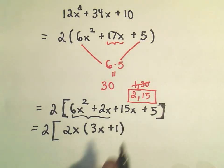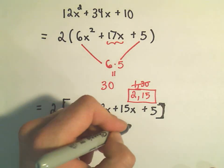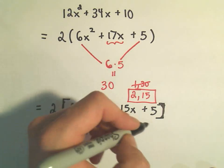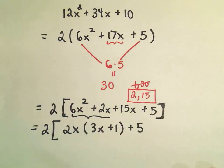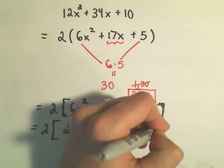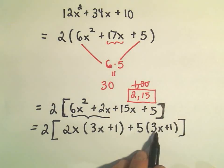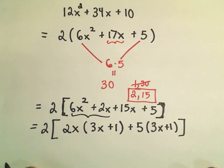And now we do the same thing on the 15x plus 5. I think, what's the greatest common factor of those two terms? Well, I believe we could factor out a 5. And again, we would need a 3x plus 1 inside the parentheses to get our 15x and our positive 5 back. And now we're basically done.